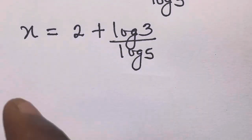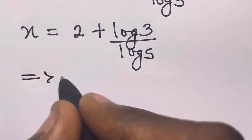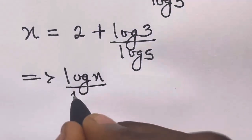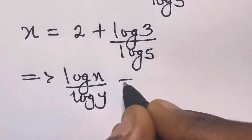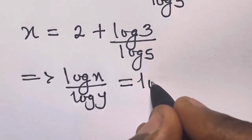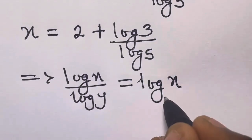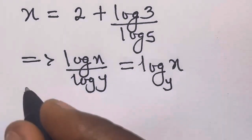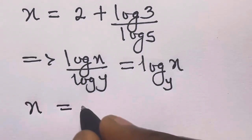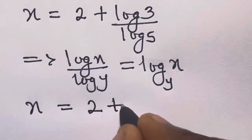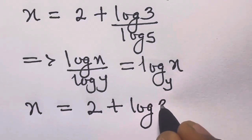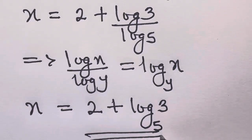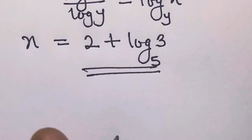Recall from the change of base law that log x divided by log y equals log base y of x. Applying this, we have x equals 2 plus log base 5 of 3. So this is our answer: x equals 2 plus log₅3.